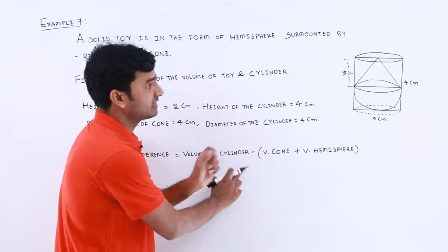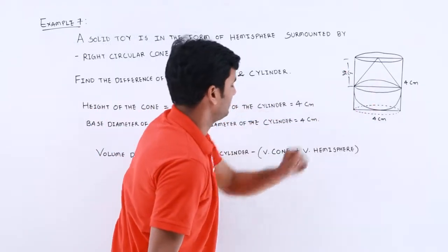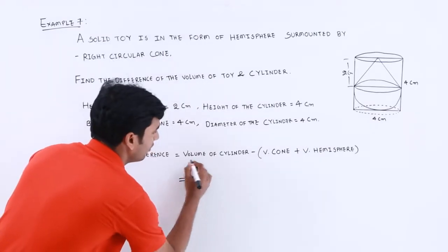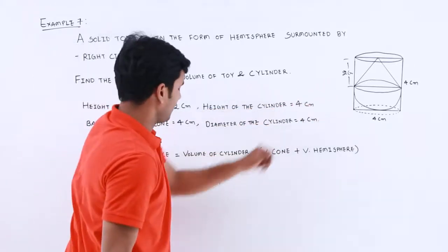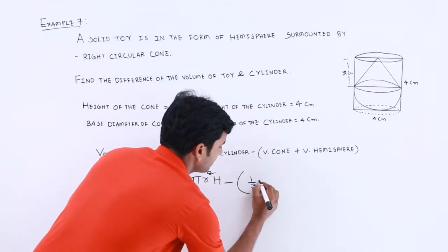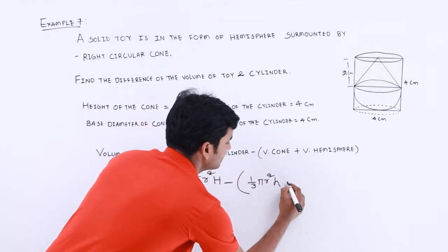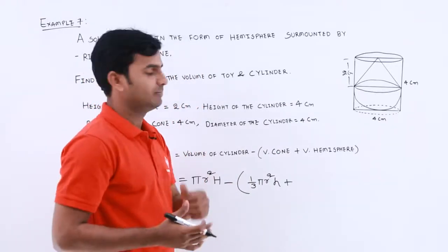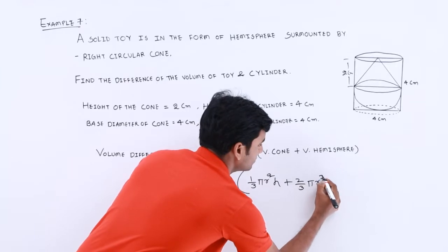The volume difference will be the volume of the cylinder minus the volume of the toy. The toy is a combination of cone and hemisphere, so the toy volume = volume of cone + volume of hemisphere. Volume of cylinder = π r² H, volume of cone = (1/3) π r² h, and volume of hemisphere = (2/3) π r³, which is half the sphere volume of (4/3) π r³.